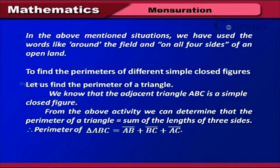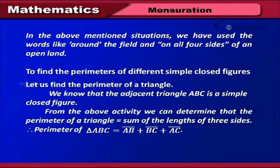We know that the adjacent triangle ABC is a simple closed figure. From the above activity, we can determine that the perimeter of a triangle is equal to the sum of lengths of its three sides. Therefore, perimeter of triangle ABC is equal to AB + BC + AC.